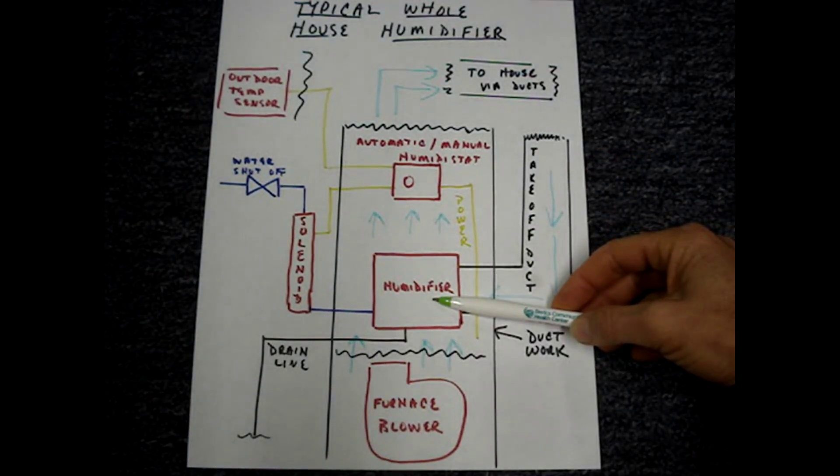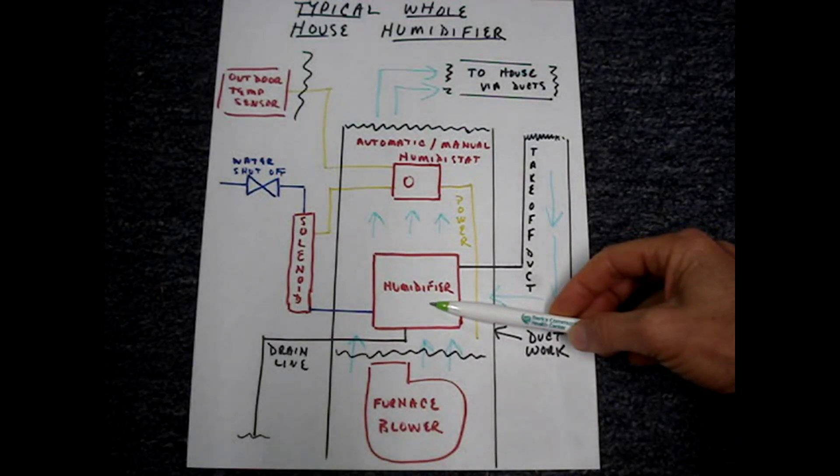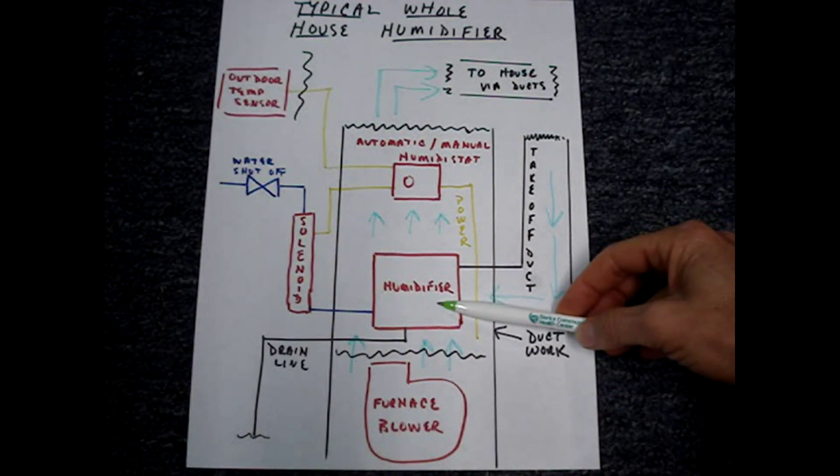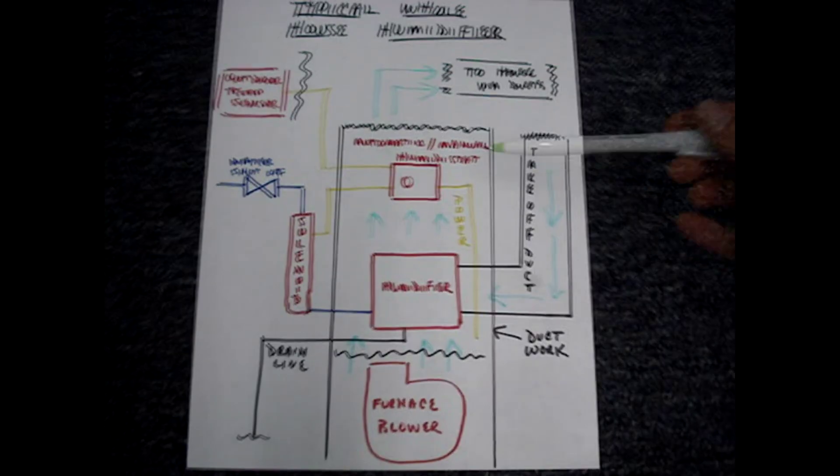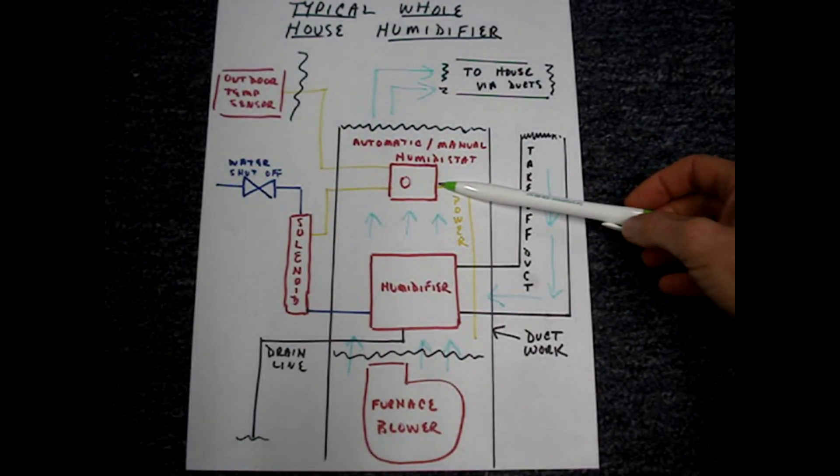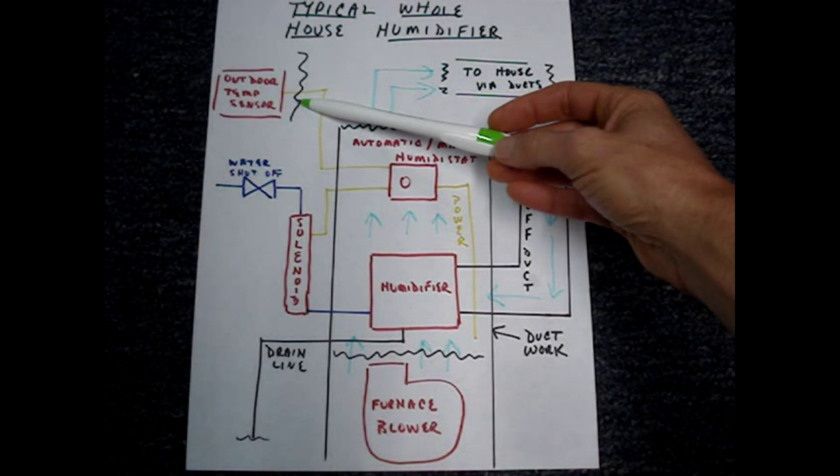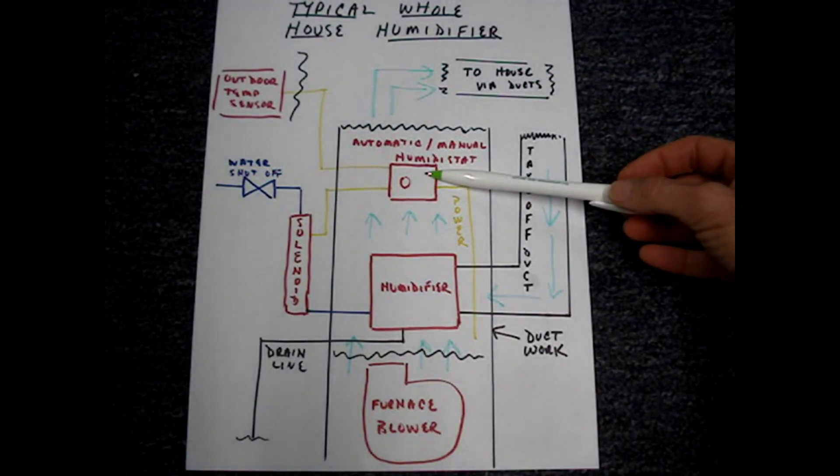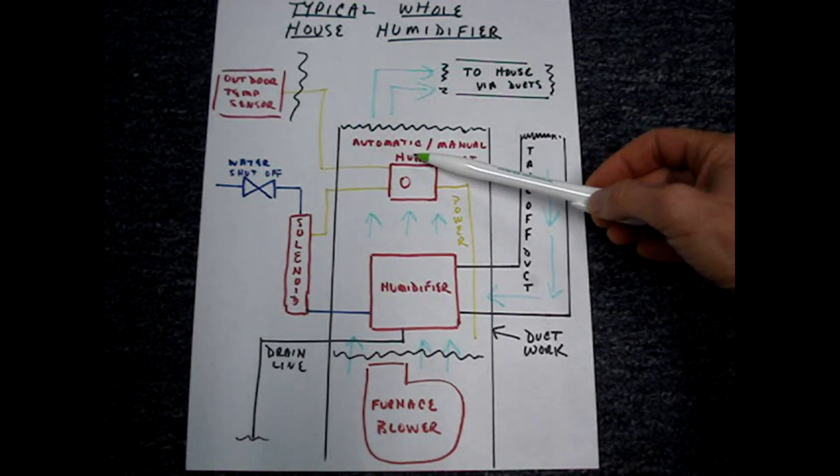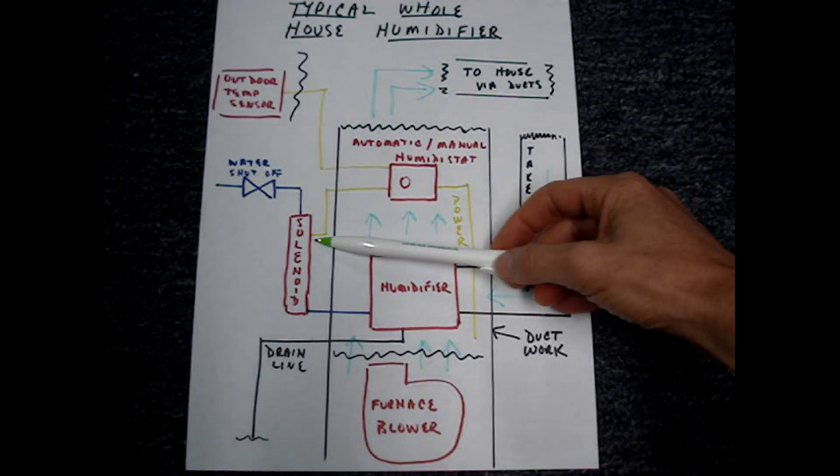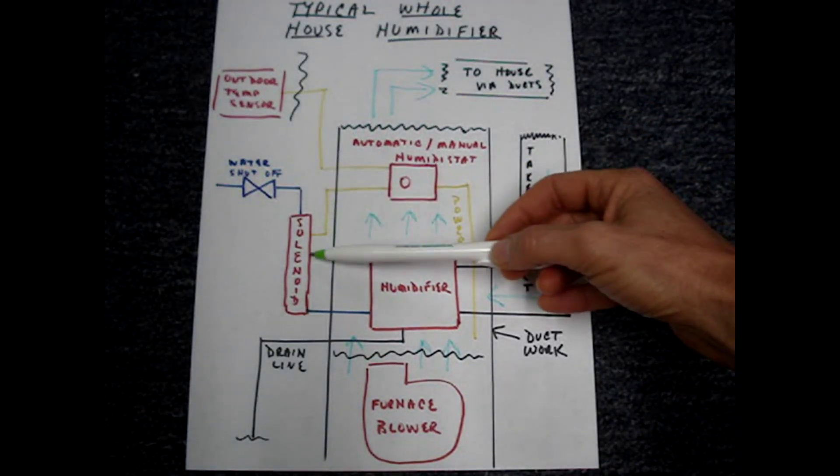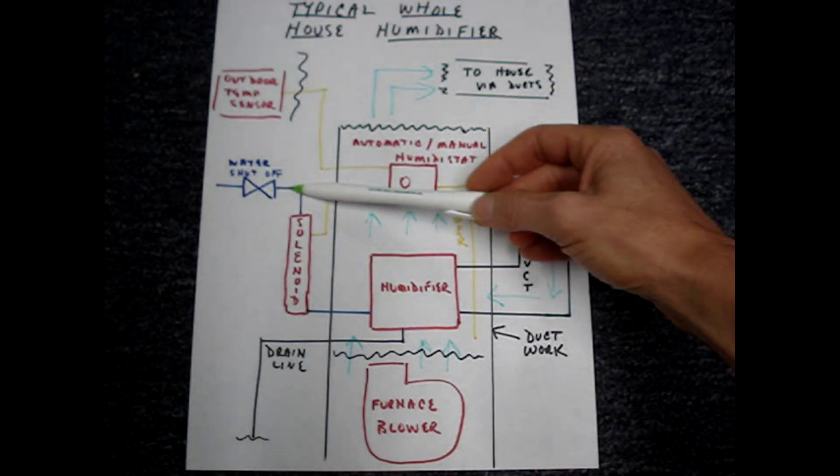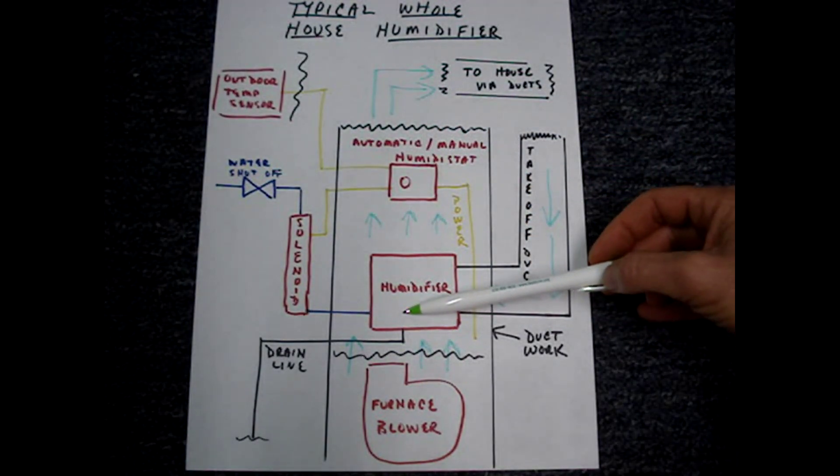If there's a power humidifier or a drum humidifier, power has to be turned on to it. When powered up, if the humidistat senses through the outdoor temperature sensor or the manual setting that it needs to humidify the air, it then sends power to the solenoid, which opens up and allows water to flow into the humidifier.